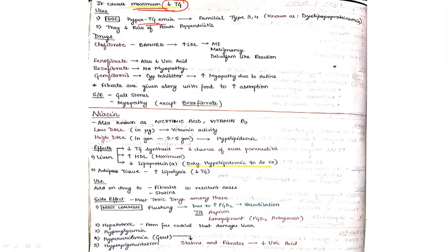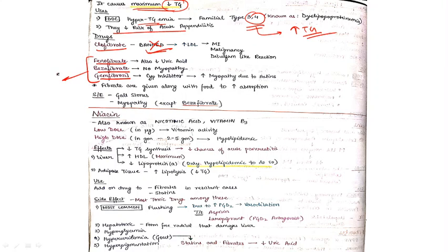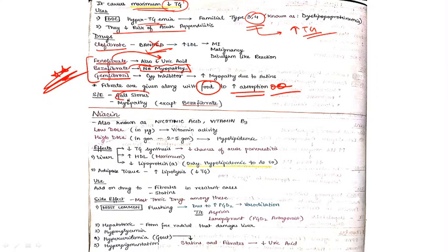Fibrates are drug of choice for hypertriglyceridemia — familial type 3 and type 4 — as these have increased triglycerides. They also decrease the risk of acute pancreatitis. The first drug was clofibrate, which is now banned. Currently used drugs are fenofibrate, bezafibrate, and gemfibrozil. Fenofibrate also decreases uric acid. Bezafibrate has no risk of myopathy. Fibrates are given with food to increase absorption. Most important side effect is gallstone formation.